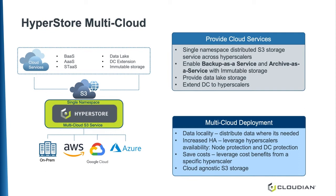With an S3 service backed by a multi-cloud deployment, you can enable cloud services like Backup as a Service, Archive, Storage as a Service, and deploy data lake solutions leveraging data locality from different cloud providers, all while having immutable storage via object lock, giving you protection from threats such as ransomware. Some of the other benefits include data locality by distributing data to where it's needed, better data availability, protecting your on-prem data by leveraging the hyperscalers, or even protecting data in a hyperscaler with another hyperscaler. You can save costs by leveraging cost benefits from each of the clouds, and finally, you get cloud-agnostic S3 object storage.